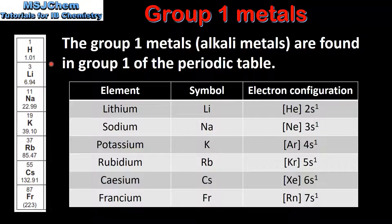On the left we can see group 1 of the periodic table, which includes hydrogen. Note that although hydrogen is in group 1 of the periodic table, it is not classified as a group 1 metal. In this table we can see the element, the symbol for the element, and the electron configuration.